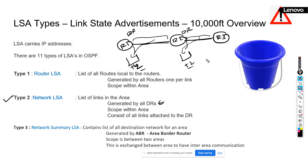How many Type 2 LSAs are we having? Two. So if I have 10 DRs, then 10 Type 2 LSAs. But the problem is scope — scope is within that area only. Even with Type 2, I cannot go beyond my area. If it is under area 0, it will be area 0 only. If it is under area 1, it will be area 1 only. We cannot go beyond our area with Type 2 LSA.